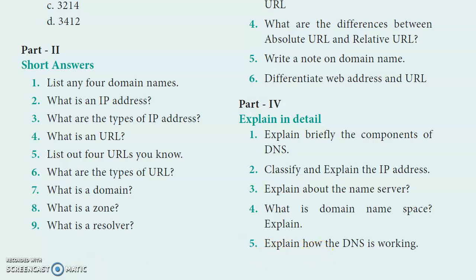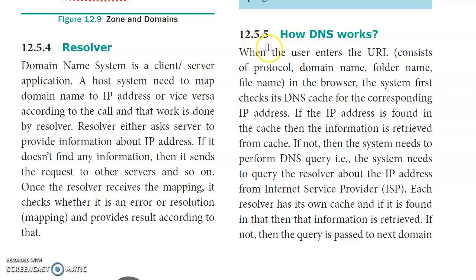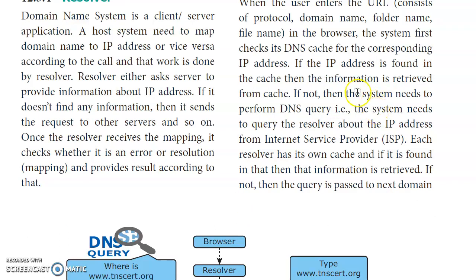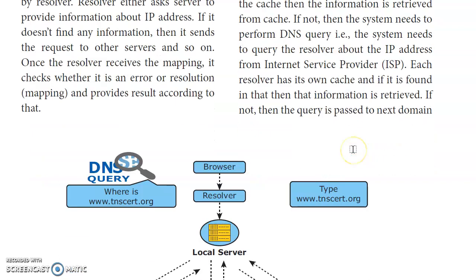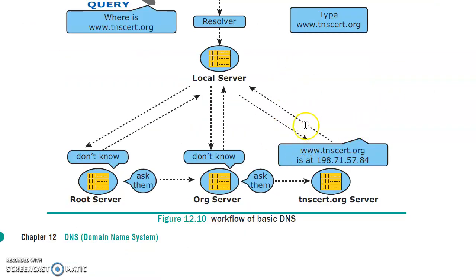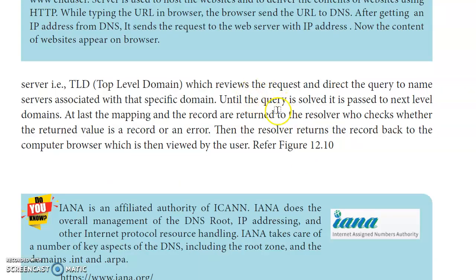Last question: Explain how DNS works. When a user enters a URL in the browser, the DNS searches its cache memory for the IP address. If found, it returns the IP address. If not found in cache memory, the query passes to the next domain level. The query is passed through different levels until it is resolved. Finally, the resolver returns the IP address and the data is displayed on the browser.